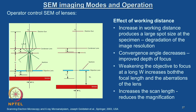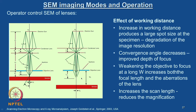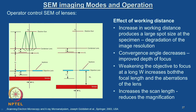The next parameter is the working distance. The working distance is the distance between the final aperture and the specimen surface. You can clearly see the effect of working distance from these two schematics: if you increase the working distance, you are increasing the probe size, which will have a significant effect on resolution. Increase in working distance produces a large spot size at the specimen, which causes degradation of the image resolution.